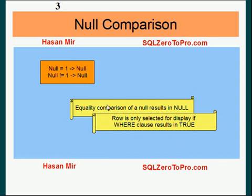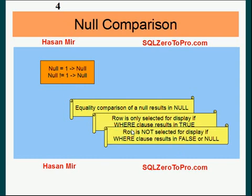How is that a problem? A row is only selected for display if the WHERE clause results in true. A row is not selected for display if the WHERE clause results in either false or null. So if you compare any value with a null using these operators, like equal to sign or not equal to sign, the whole comparison will result in null, and the whole WHERE clause will result in null. As a result, the row will not be selected for display.